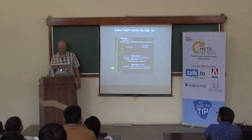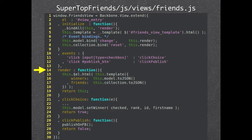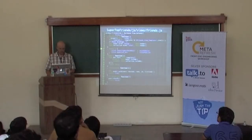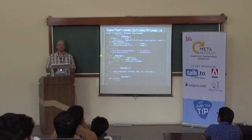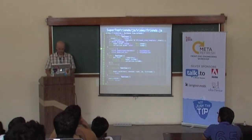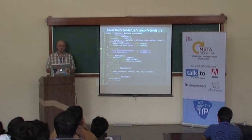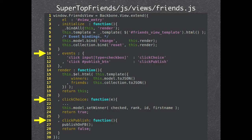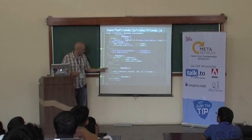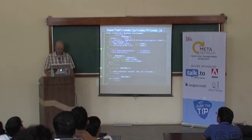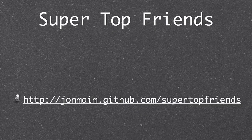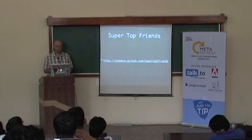If you go back in the router, in our friends function, you see we're not calling the render function of the Friends View directly — we're calling the fetch function of the Friends Collection. Because we have defined this event binding, each time there is a reset from the Friends Collection, the Friends View will render. Then we have the render function, which is the same as the landing view but with more properties given to the template, because we want the template to display different friends. For events, we have two user events to handle: for the checkbox we go to the click choice function, and for publish we go to the click publish function.